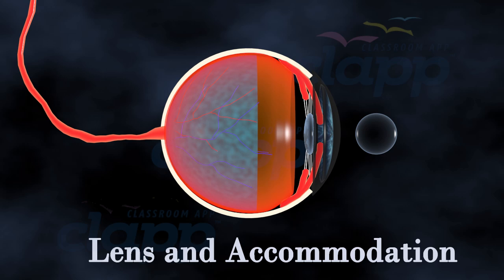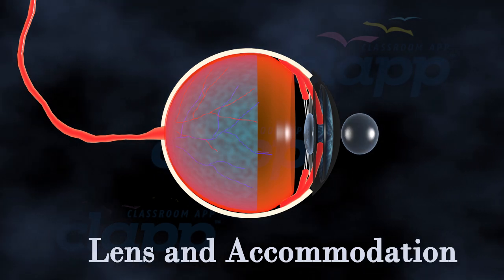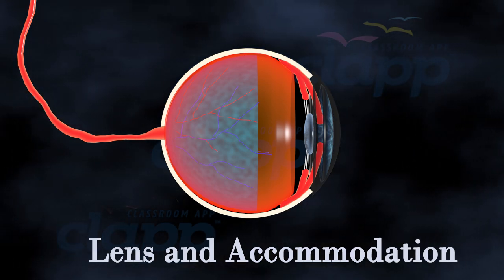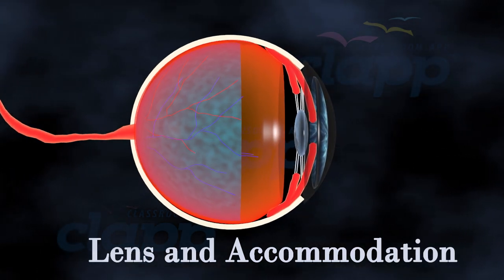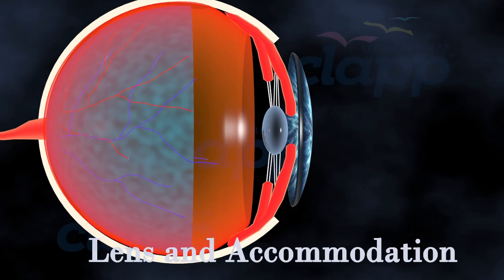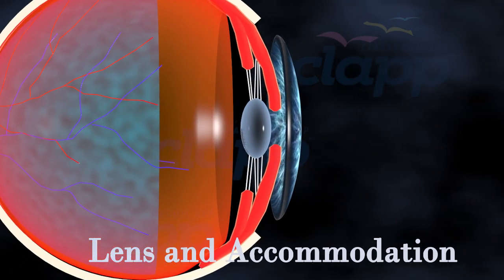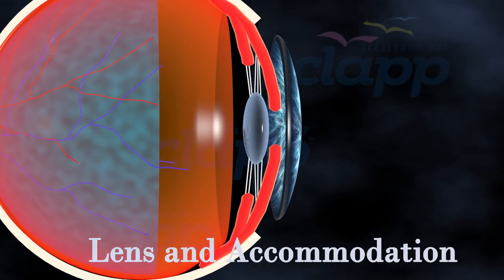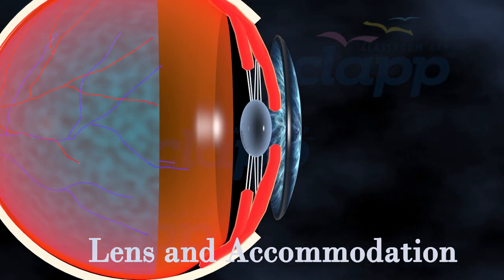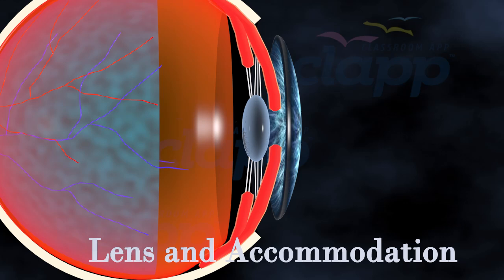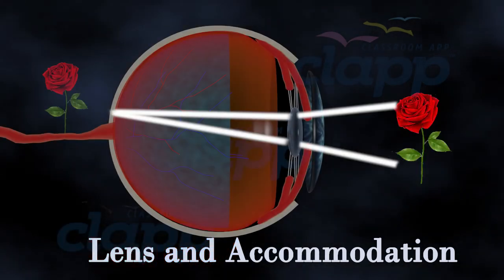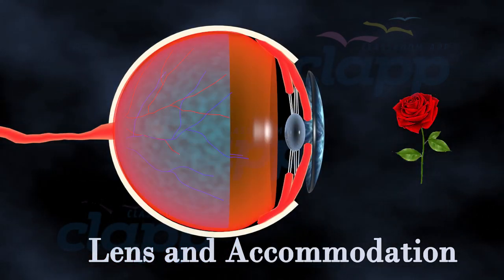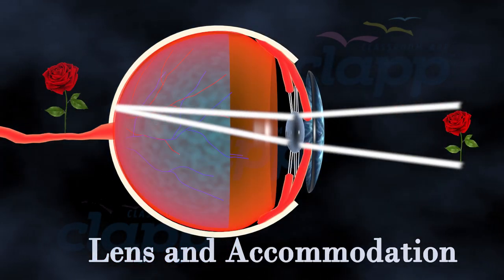Lens and accommodation. Behind the iris lies the lens, a flexible structure that changes shape to focus light onto the retina. This process is called accommodation, and allows us to see objects up close or far away with clarity.